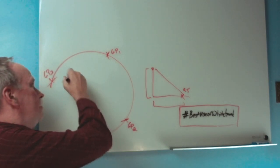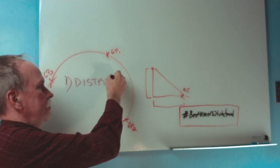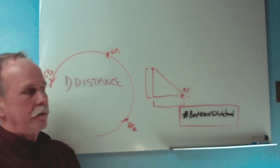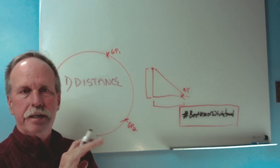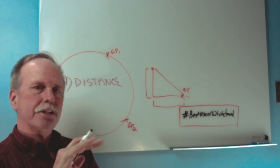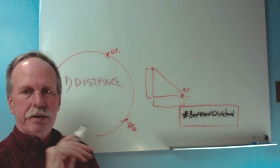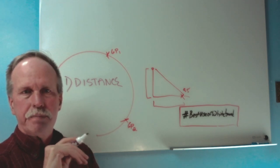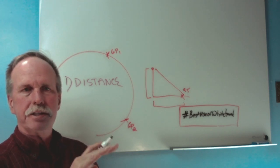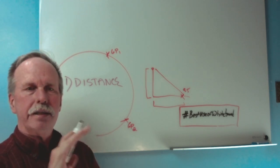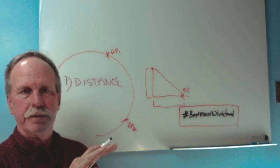Number one: big distances. There are big distances between the Earth and the Sun, and the Earth and the stars. As a direct result, light from these celestial objects arrives at Earth essentially in parallel. That is a foundation of celestial navigation — that light from the Sun, the stars, and the planets arrives at Earth in parallel.